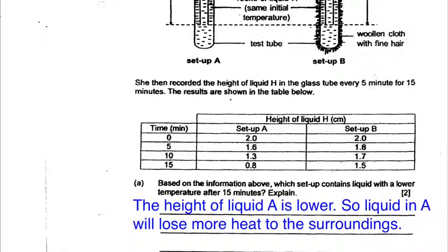Liquid A will lose more heat to the surroundings. One mark is given for the correct identification that it is liquid A. The other mark is for explaining that it loses more heat. They only ask you to explain why it lost more heat. The second part will ask you how that happens.